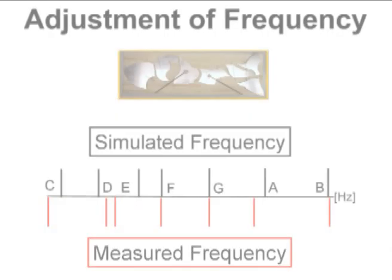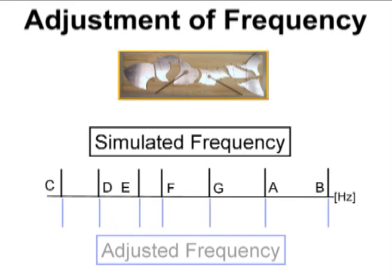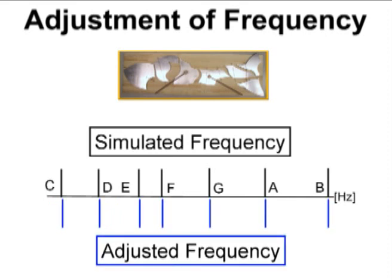This graph shows the eigenfrequency of the metallophone. The black line shows the simulated frequency with eigenanalysis, while the red line shows the actual measured frequency before adjustment. After adjustment, we have achieved the exact target tone.